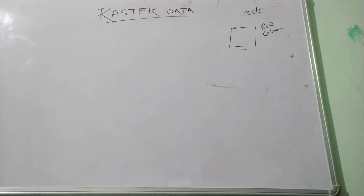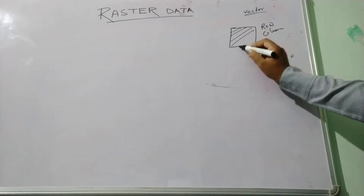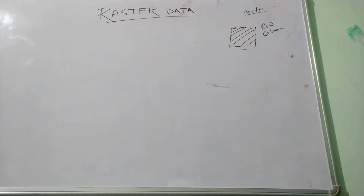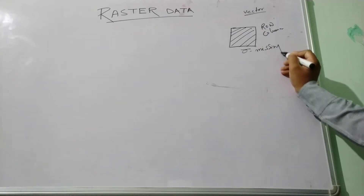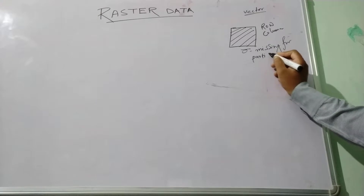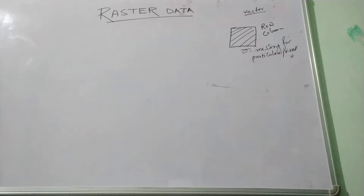Another important characteristic of the raster data is that it will average all the values that lie within a grid cell. And every pixel has a value — if the data value is zero, that means the data is missing for that particular pixel.